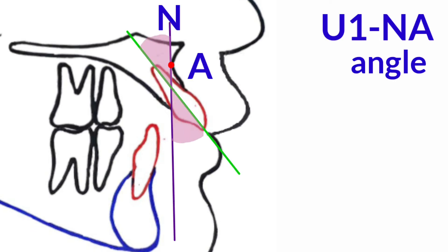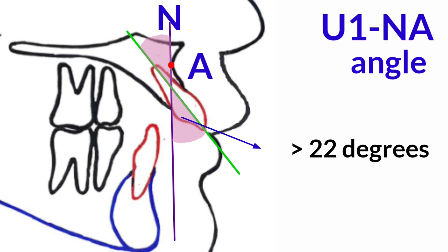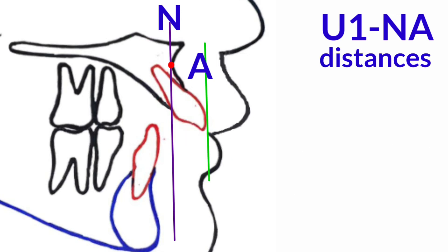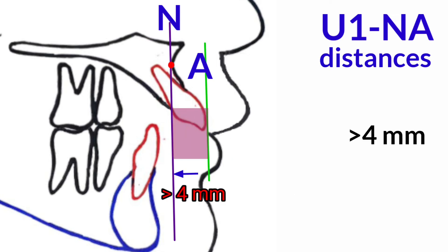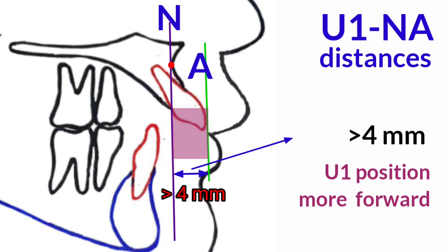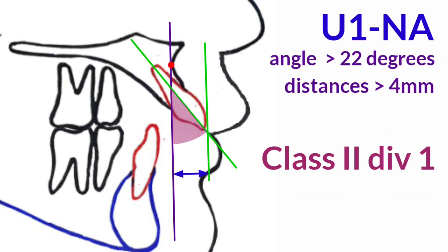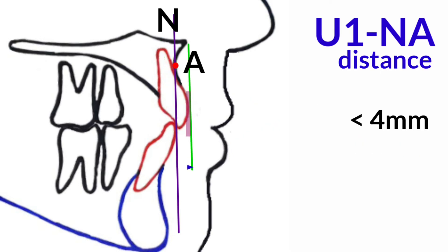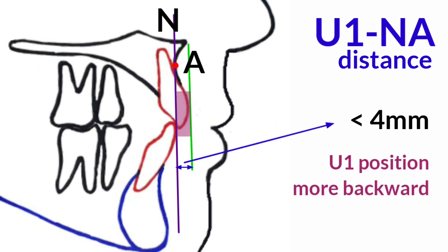Greater than 22 degrees means the upper incisor inclination is too labial. Greater than 4 mm means the upper incisor protrudes — the position of the upper incisor moves forward. Less than 22 degrees means the position of the upper incisor moves backward.